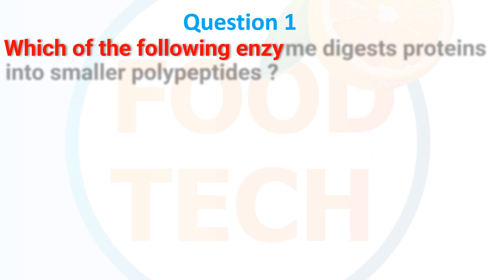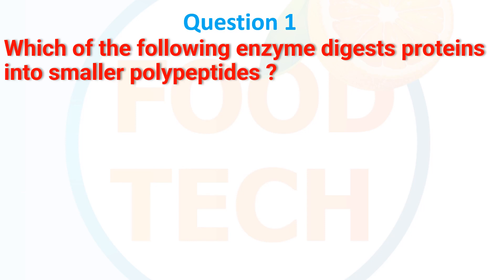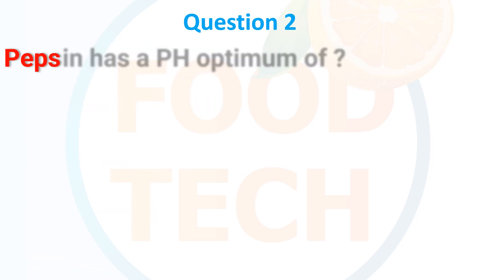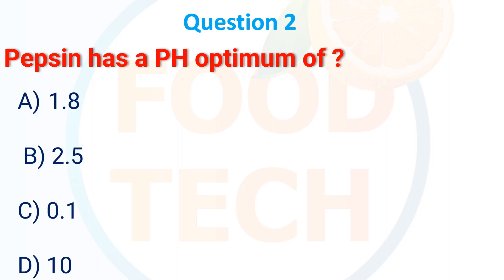Which of the following enzymes digest protein into smaller polypeptides? A. Chymotrypsinogen, B. Chymotrypsin, C. Trypsinogen, D. Trypsin. The answer is D. Trypsin.